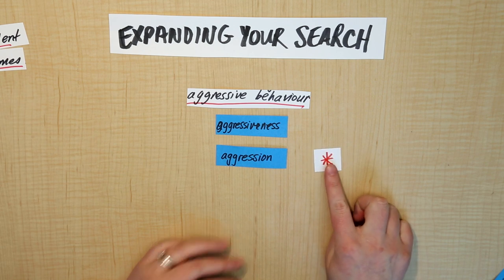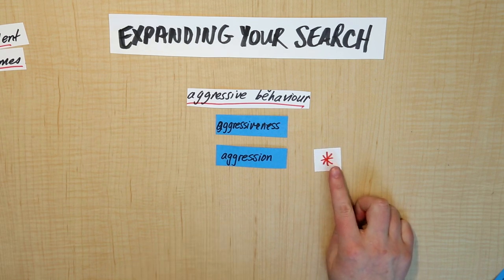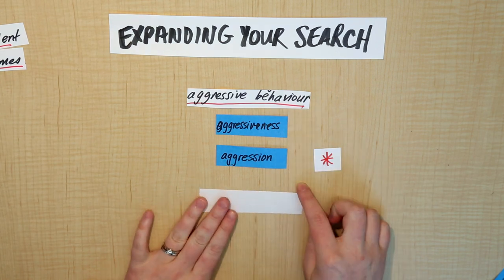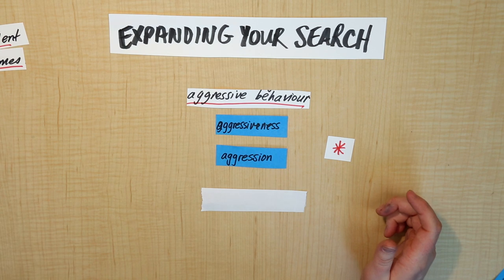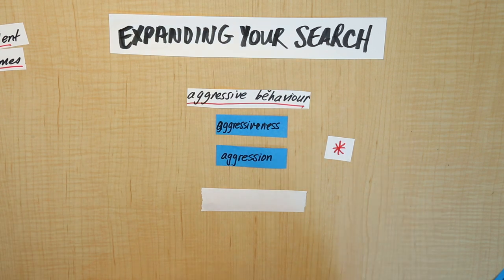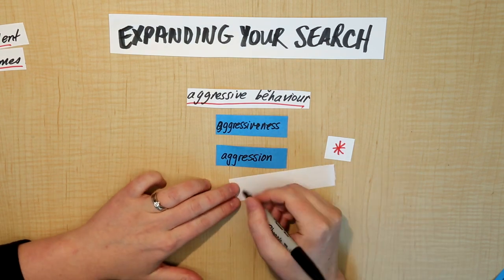This little star can act like a wildcard. That would allow you to put in only one of these options with the star, and then you can tell the system you're happy with any of these. It would look like this.